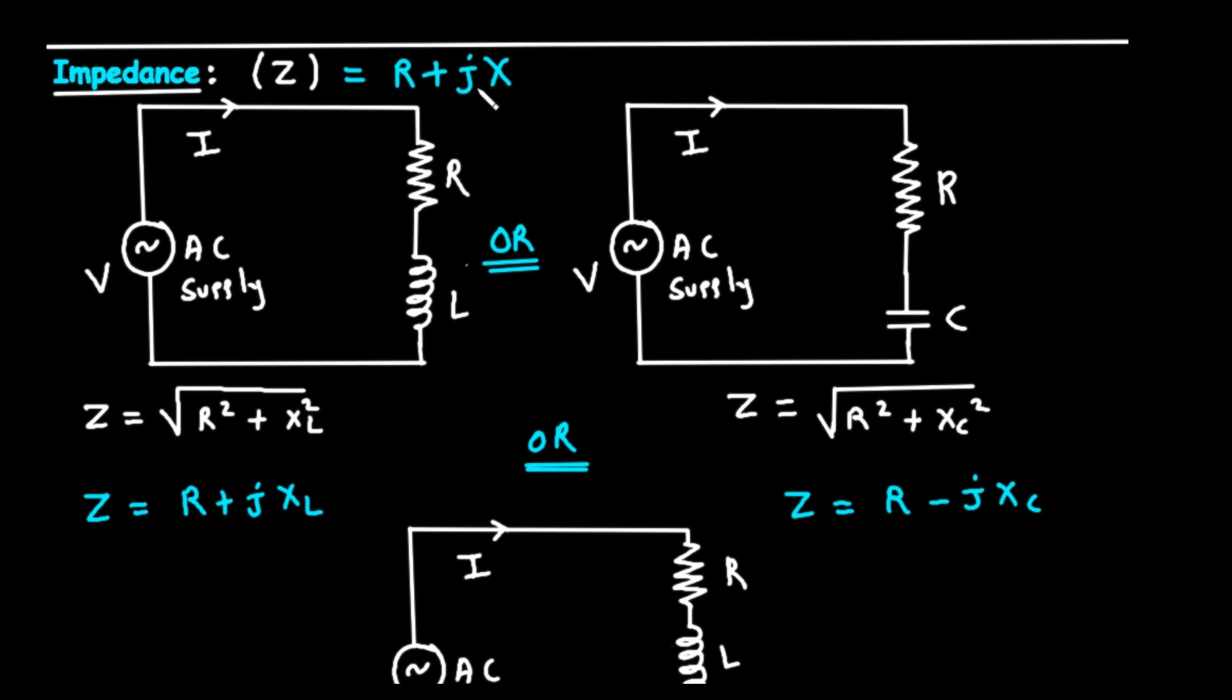This shows that impedance is a complex quantity. The R is the real part, representing the energy dissipating resistance. The jX is the imaginary part, representing the energy storing reactance, which includes the phase shifts.